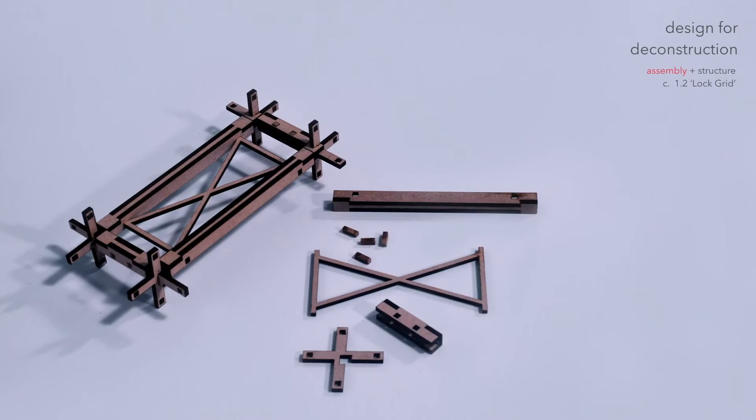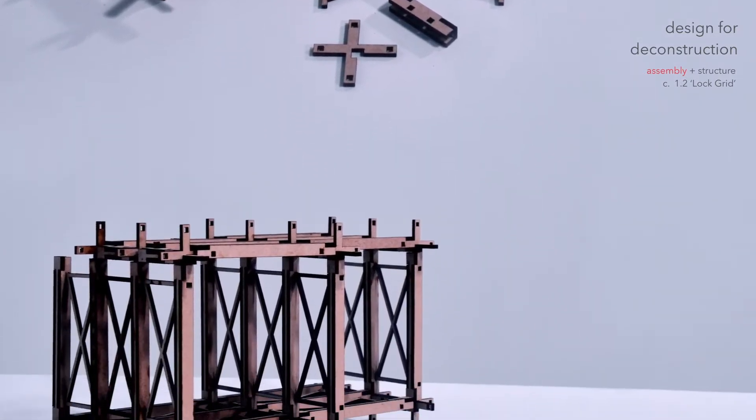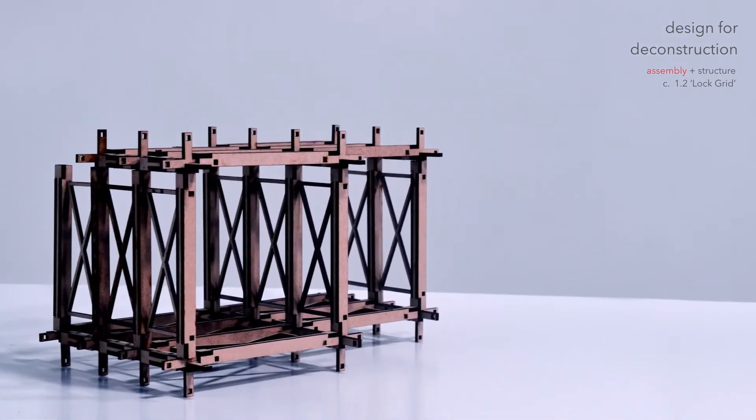A logical iteration from here is to break down the grid into a massively modular system. This navigates the transportability and handling issues, and makes the resulting form vastly more flexible. Four basic components can be used to assemble a 3x1 grid, expandable in all four directions.